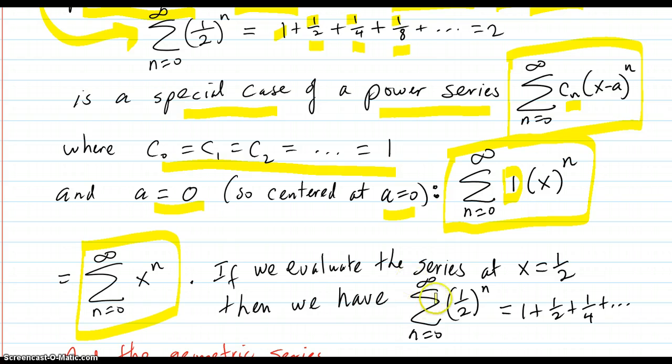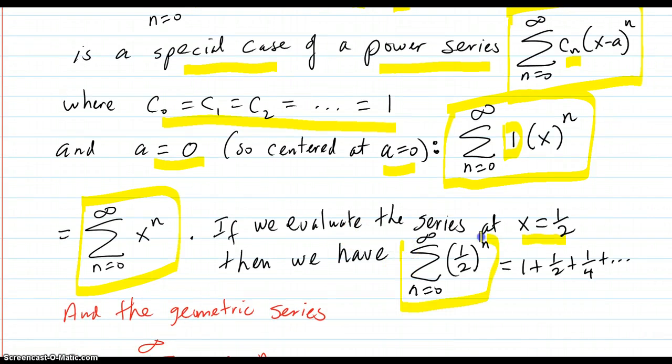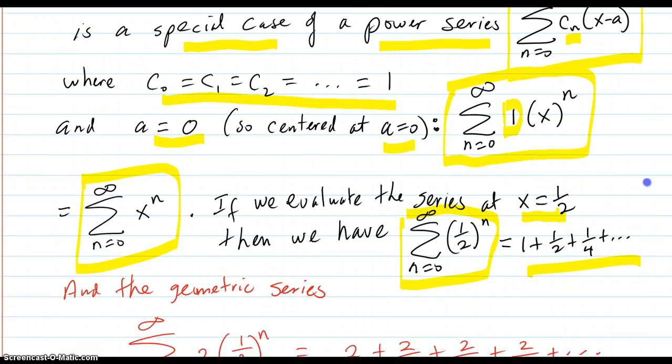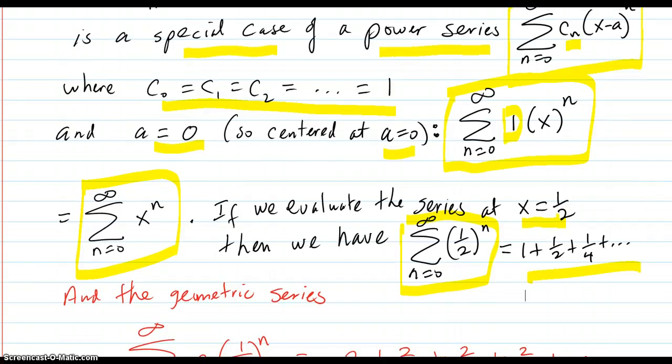If we evaluate the series at x equal 1/2, then we have our geometric series by putting the 1/2 in for the x. So a power series evaluated at an x value can make up a geometric series.